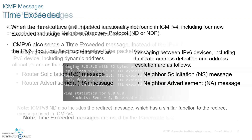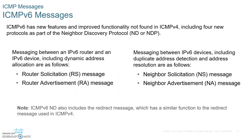Now, with ICMPv6 messages, I want you to write down the Neighbor Discovery Protocol, NDP, or sometimes just called ND. It has a couple of messages you need to know. For the messages between the router and the host, there are two: the router solicitation and the router advertisement.